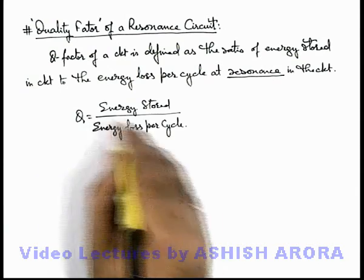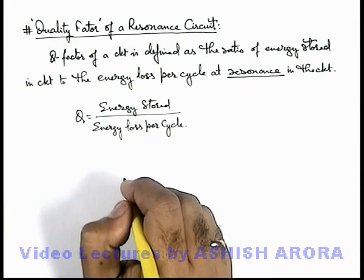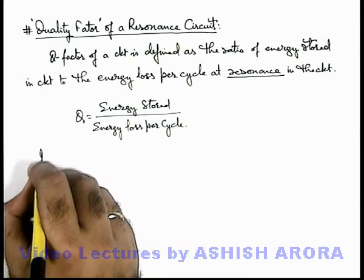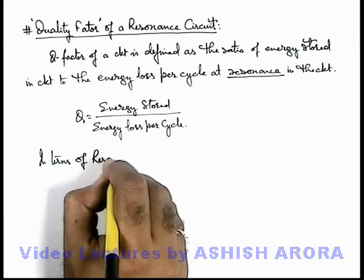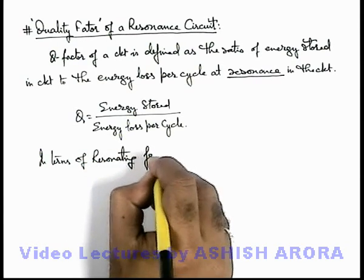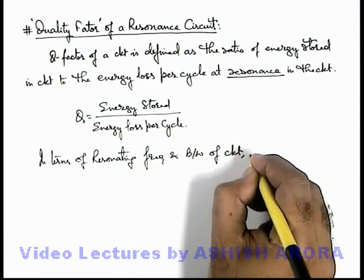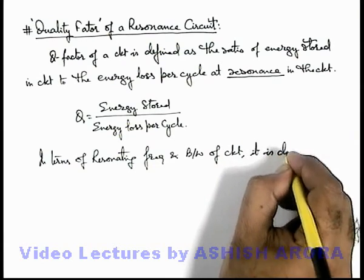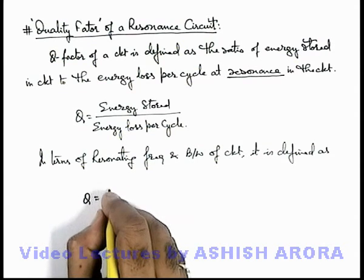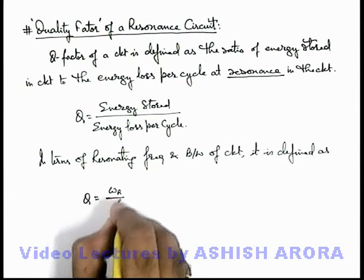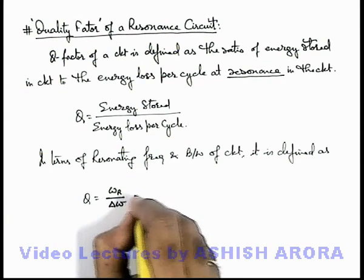The physical significance of this Q value or Q factor of the circuit we will discuss later. Right now, it is important to understand it. In terms of resonating frequency and bandwidth of the circuit, it is defined as: this same Q factor numerically can be defined as resonating frequency divided by the bandwidth. The ratio of resonating frequency to bandwidth.